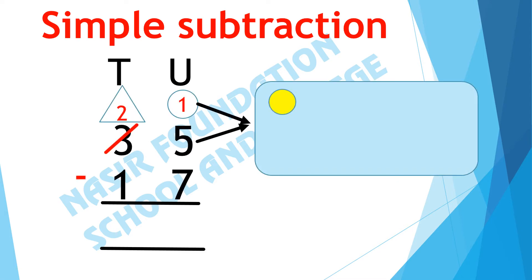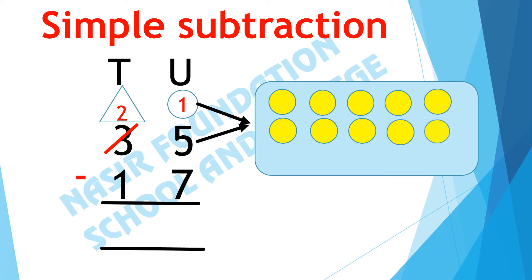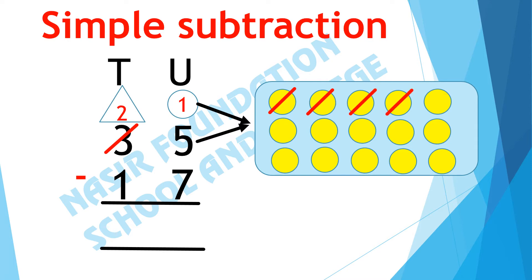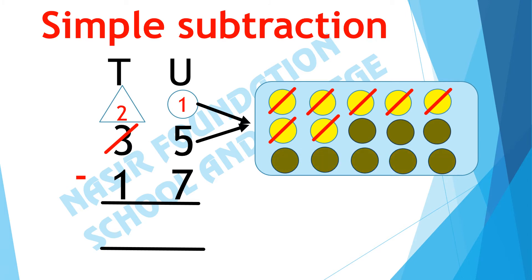Here we have 15 units. We count 15 circles and subtract 7 units from them. After subtracting 7, here we have 8 units left. Now we will subtract the tens: there are 2 tens and we subtract 1 from it, so here we are left with only 1 ten.